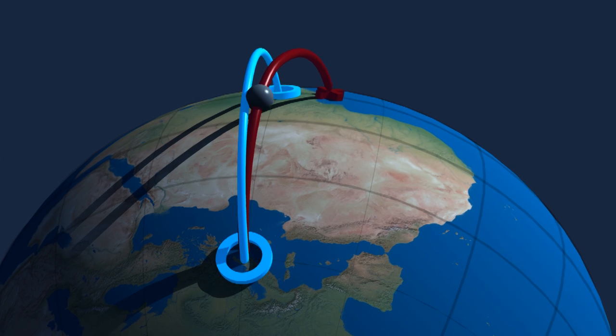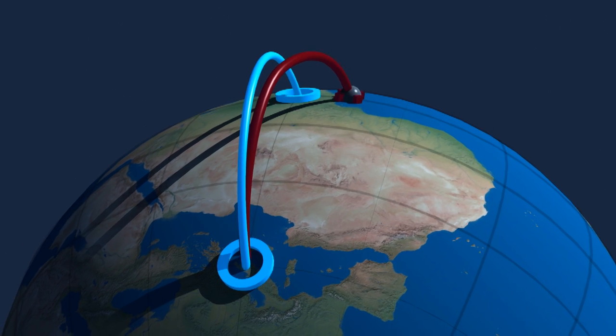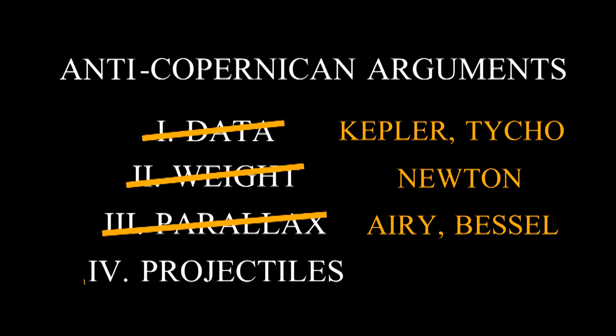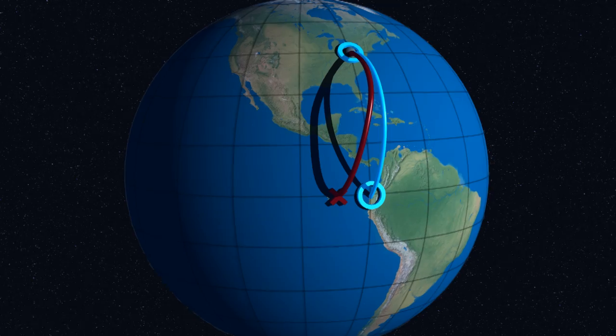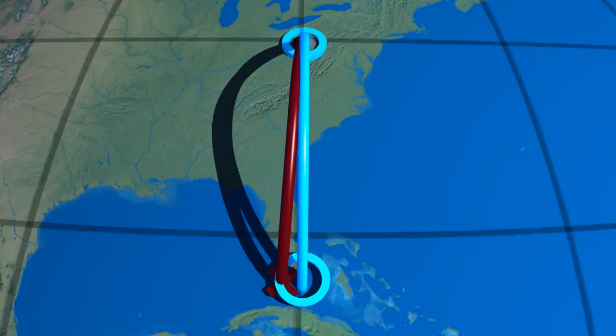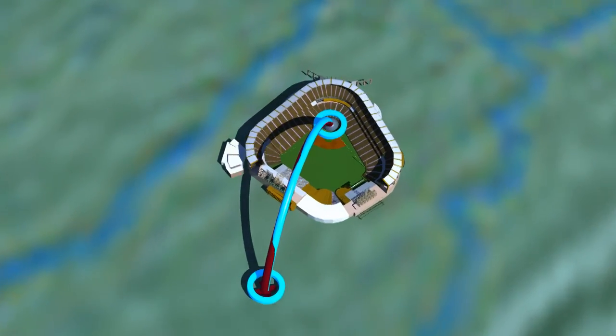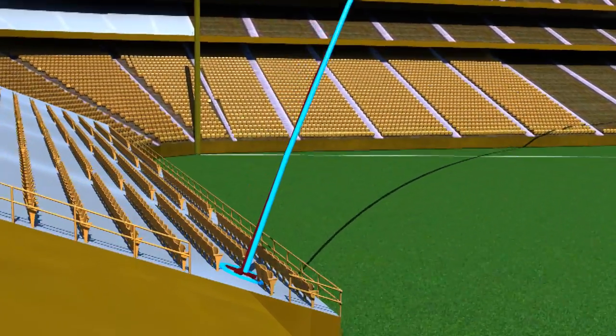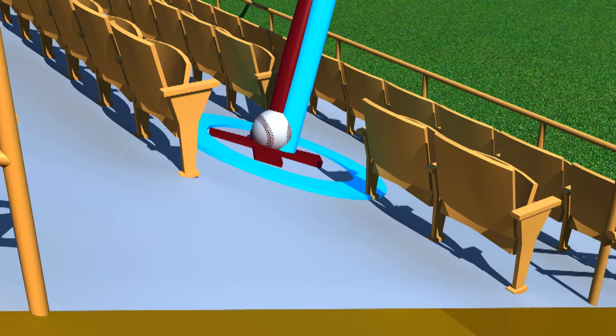The motion of projectiles on a rotating body was not completely understood until Coriolis derived his equations describing the motion. However, this effect is only noticeable across very large distances. When a batter hits a home run, this effect is smaller than the width of the ball.